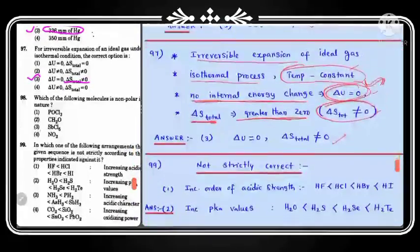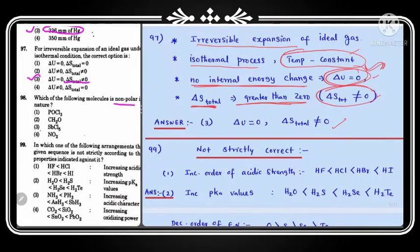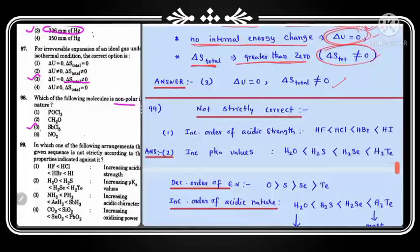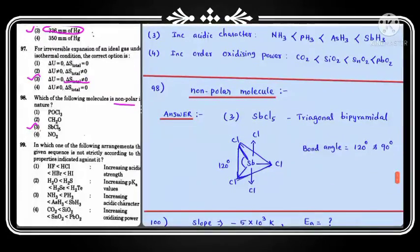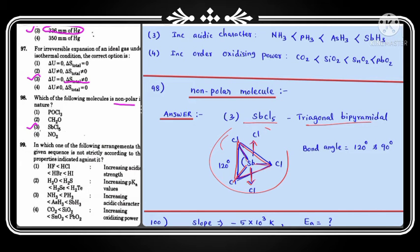Question number 98: which molecule is non-polar? The answer is option 3, SbCl₅ (antimony pentachloride). SbCl₅ has trigonal bipyramidal geometry: three chlorines lie on the trigonal plane (120° apart) and two chlorines are above and below the plane. Due to the symmetric arrangement, the bond dipoles cancel out, making SbCl₅ non-polar.